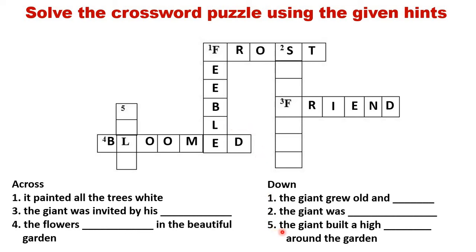Now let's do part two. It says: the giant was blank. What was the nature of the giant — was he honest, was he humble? What kind of giant was he? Yes, he was a selfish giant. You know the spelling of selfish. So quickly write down selfish: S-E-L-F-I-S-H. Very good.